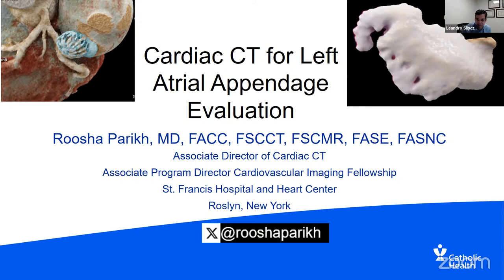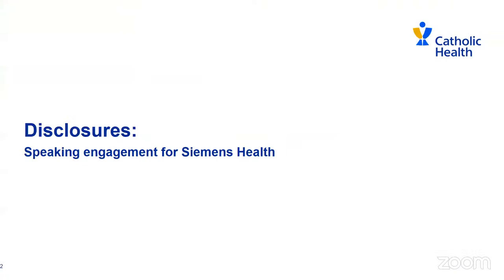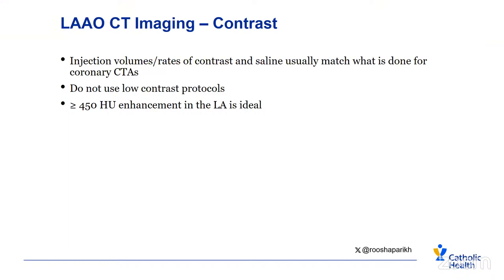Thank you, Leandra, for the kind introduction. Good afternoon, everybody. We're going to go through a whirlwind tour of cardiac CT for left atrial appendage evaluation. These are my disclosures. When we talk about left atrial appendage occlusion CT imaging, the first thing I want to discuss is contrast and the protocol. You want to use injection volumes, rates of contrast, and saline which usually match what is done for coronary CT. You don't want to attempt to use low contrast protocols.